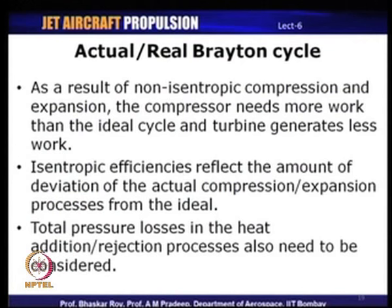As a result of non-isentropic compression and expansion, the compressor requires more work than in the ideal cycle and the turbine generates less work. The isentropic efficiencies reflect the deviation of these processes from ideal, and total pressure losses in the heat addition and heat rejection processes must also be considered in a real cycle analysis.